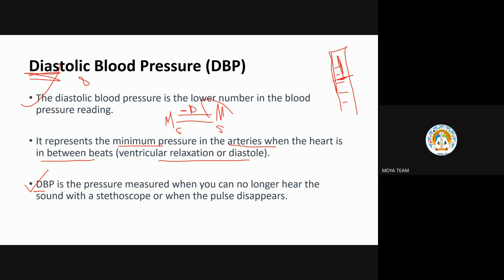When you first hear a sound, that is your systolic blood pressure — the upper number. Then the mercury comes down further, and when the pulse disappears or you can no longer hear any sound, that is your diastolic — the lower one — which normally should be 80. The upper number should normally be 120. If either differs, the person has a problem.